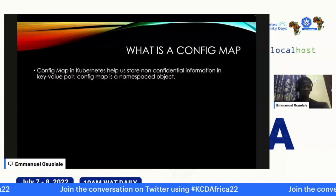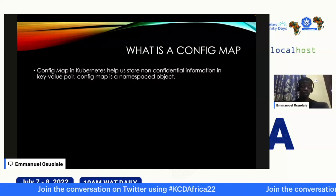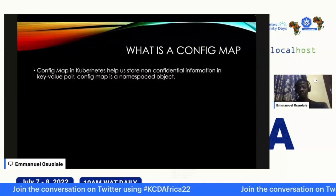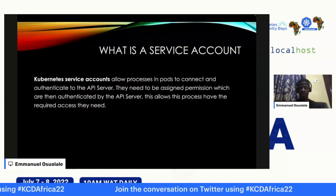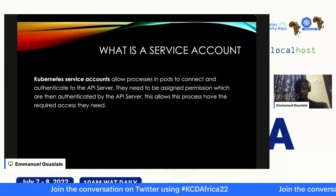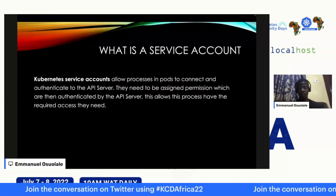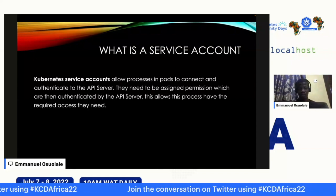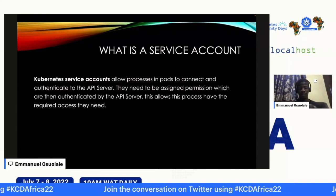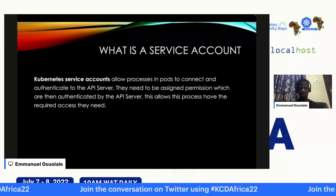Next, we'll create a ConfigMap. It's used to store non-confidential information in key-value format. This will help us store some information with regards to the Kubernetes ingress controller. A service account allows processes to connect and authenticate with the Kubernetes API server. Before they can work properly, they need to be assigned permissions, which are then authenticated by the Kubernetes API server, giving those processes the required access they need.